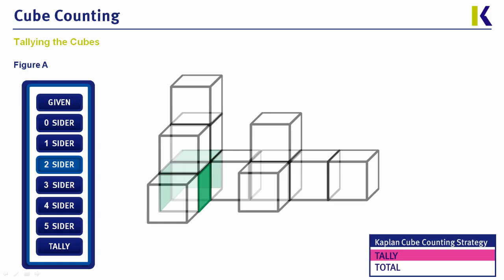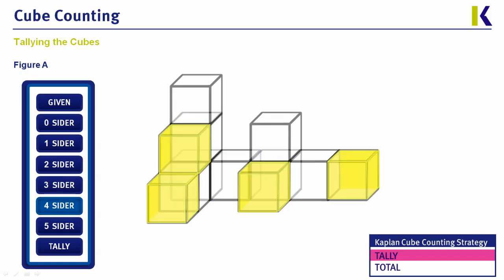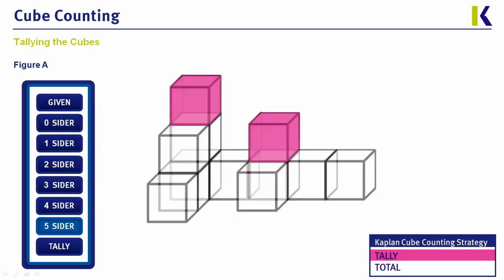For two-siders, there are two in the leftmost section on the bottom area. Three-siders appear in the back, and there are three of them. Four-siders appear in the front, and there are four of them. And five-siders appear at the top, and there are two of them.